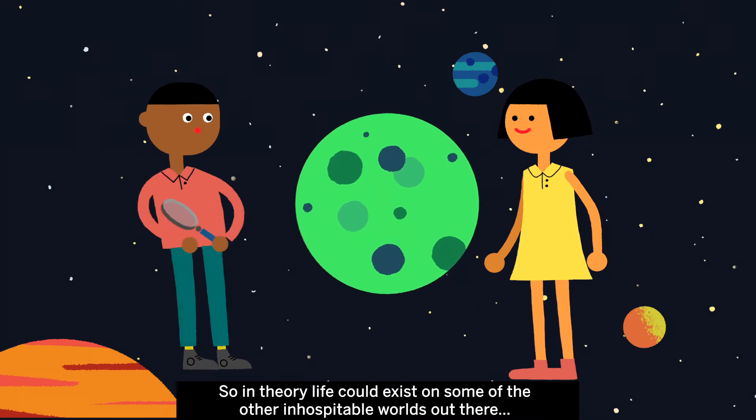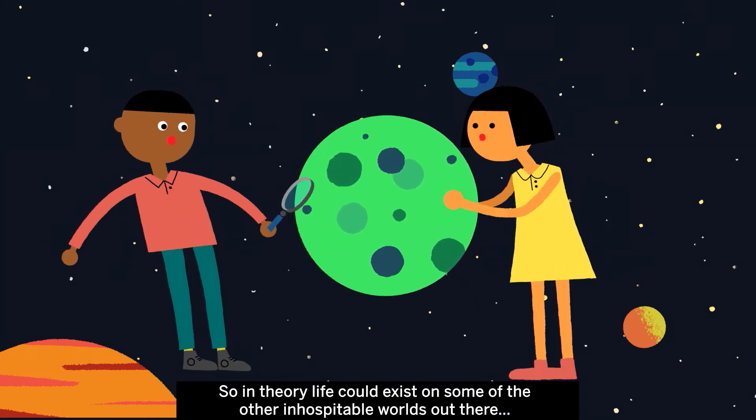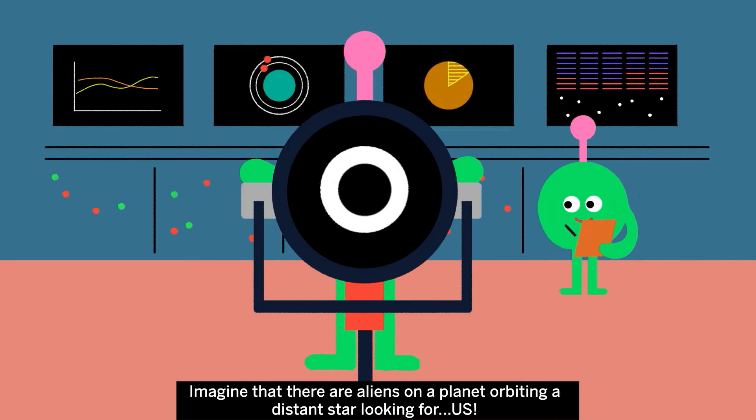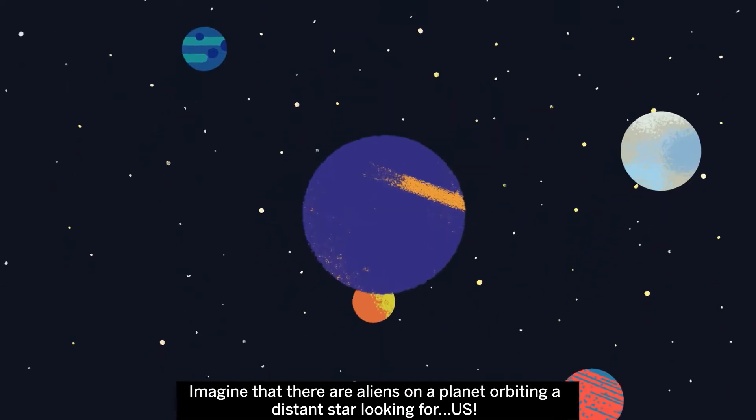So in theory, life could exist on some of the other inhospitable worlds out there. But how would we detect its presence?